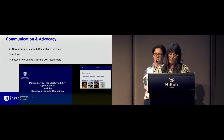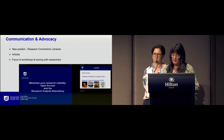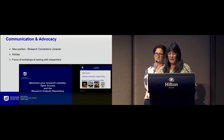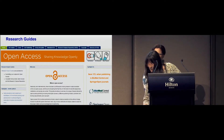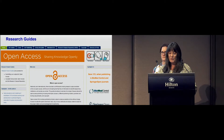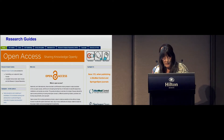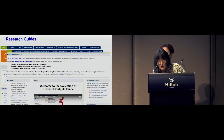Other mechanisms included articles on open access and publishing in the university's research degrees newsletter. There have also been numerous workshops and training sessions for other library staff, research staff, and HDR students. Other mechanisms have been research guides — the main guide developed has been the open access guide, along with the collection of research outputs guide and the publishing research guide.